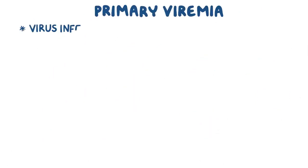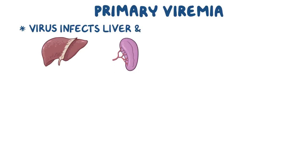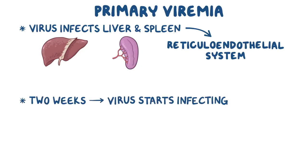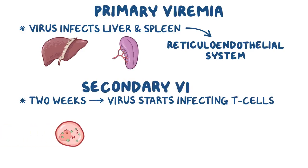In primary viremia, the virus infects a part of the immune system in the liver and spleen called the reticuloendothelial system, which is made up of phagocytic cells. About two weeks after entering the body, the virus starts infecting immune cells themselves — specifically T cells — and that is considered the secondary viremia.